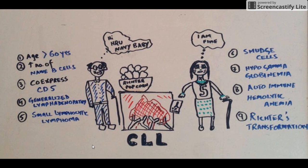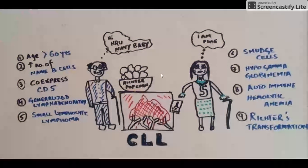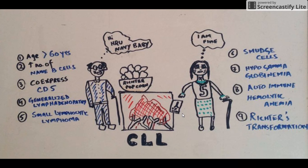Hello guys, today I have made a mnemonic about a very important blood condition called CLL — Chronic Lymphocytic Leukemia. For this I made two old guys with a cane in their hand, showing that they are old. The old lady's name is 'Navy Baby,' and the scene is around a fireplace with a popcorn bowl and a popcorn packet falling from the lady's hand. Now let's go over the important points about CLL.